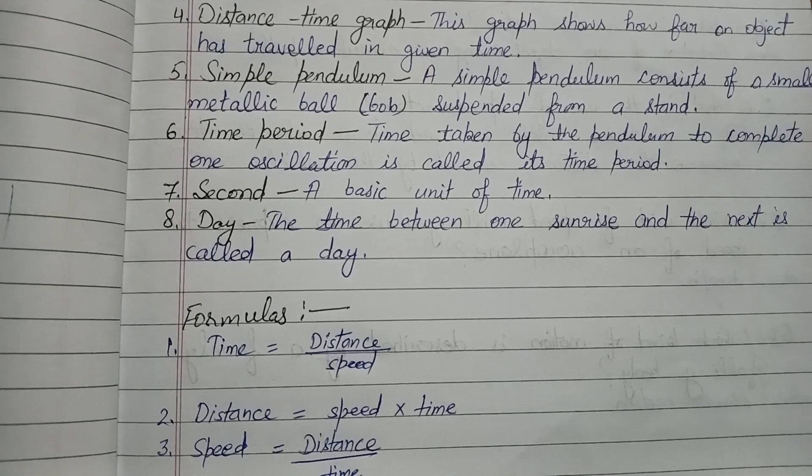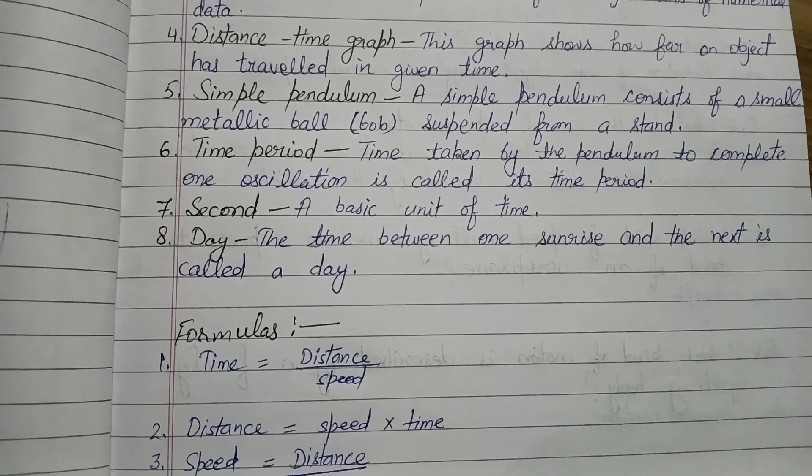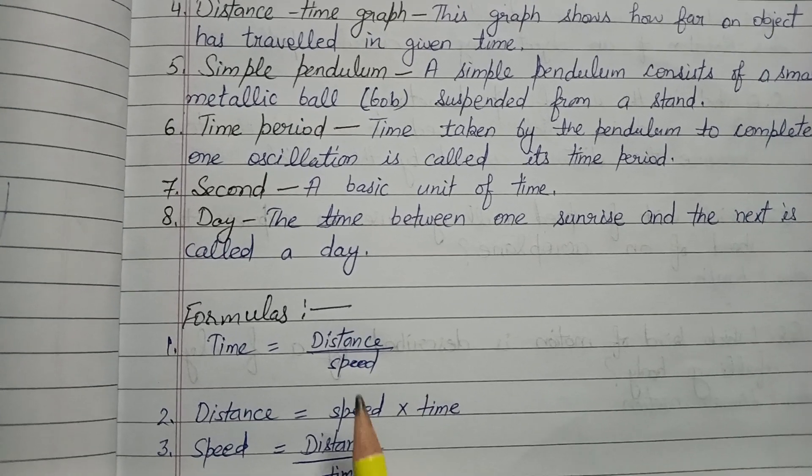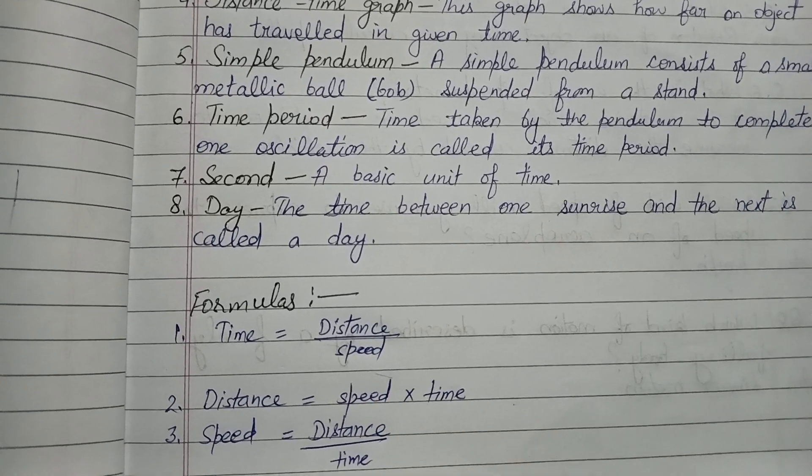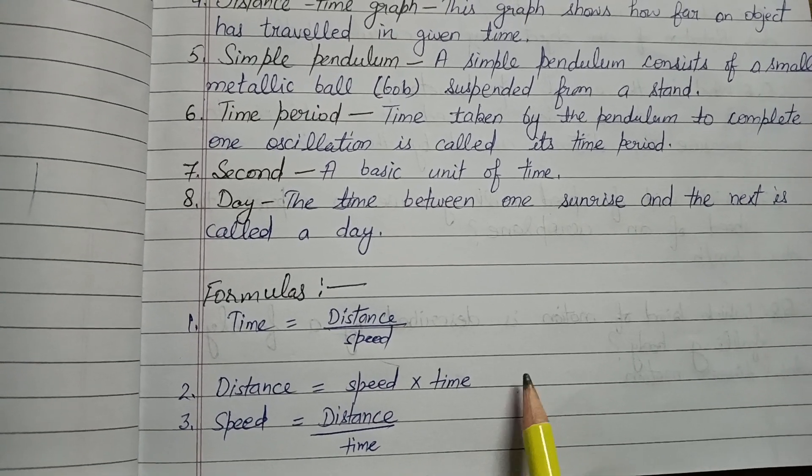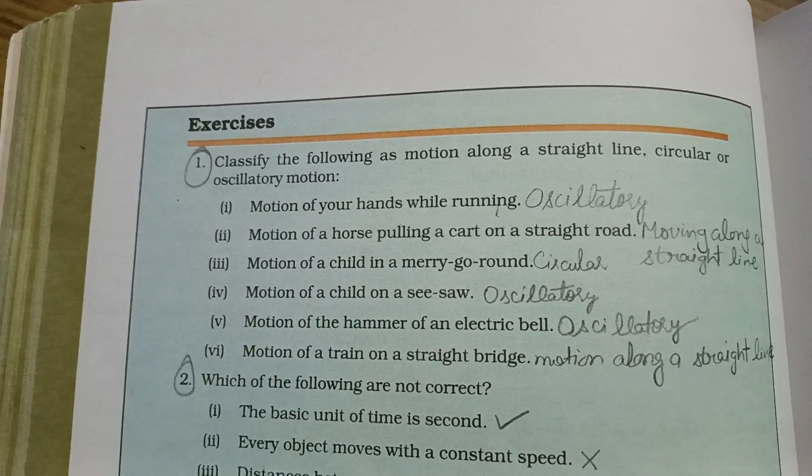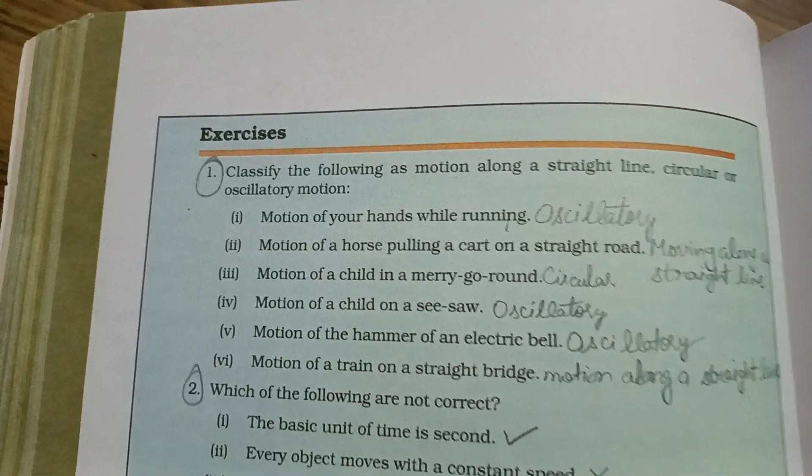Next question - important formulas hain. Agar humein time calculate karna hua, distance or speed given hua, to time kaise find out karenge - distance upon speed. Similarly, distance find karne ke liye speed ko time se multiply karenge, and speed find karne ke liye distance ko time se divide karenge.